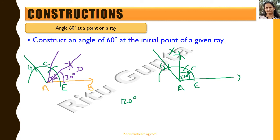This is how we construct different angles using geometric constructions. We can clearly see that 15 degrees is easy — just draw an angle bisector of 30 degrees. For 45 degrees, draw an angle bisector between 30 and 60. For 75 degrees, draw an angle bisector between 60 and 90. These are the ways in which we can construct various different angles.